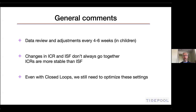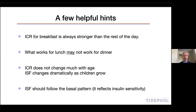Even with closed loops, we still need to optimize these settings. I hear a lot of people saying that with a closed loop system adjusting blood sugars continuously all day, do we really need to optimize the insulin-to-carb ratio and the ISF? My answer is yes, because the better those ratios are set, the more effective the closed loop system will be. Most closed loop systems predict what the blood sugar will be in the near future and calculate how much extra insulin is needed — and that calculation takes into account the ISF we told it to use.